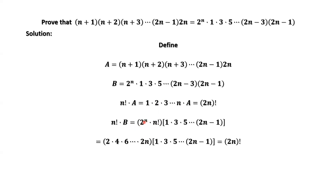We can distribute 2 to each number in n factorial. Then we have 2 times 4 times 6 ··· times 2n, which is a product of n consecutive even numbers. Combined with the product of n consecutive odd numbers, we get 1 times 2 times 3 times 4 ··· times (2n-1) times 2n, which is (2n) factorial.